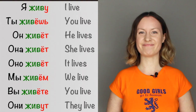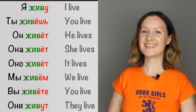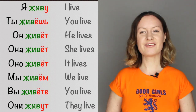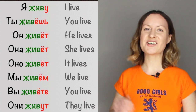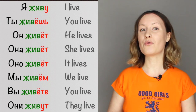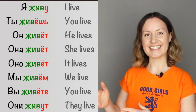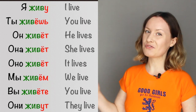Let me repeat again the conjugation of this verb and you can repeat after me to practice your pronunciation. To say 'I live' — я живу. 'You live' — ты живёшь. Ты for informal, or you singular. 'He lives' — он живёт.